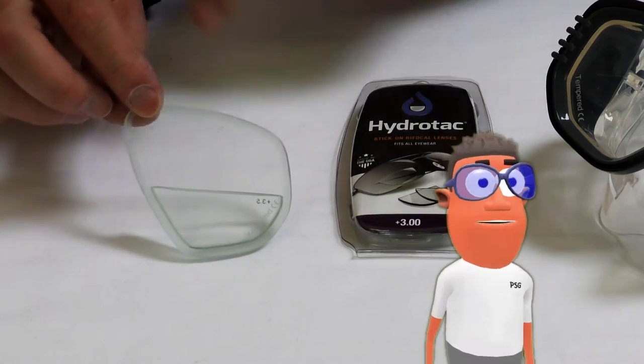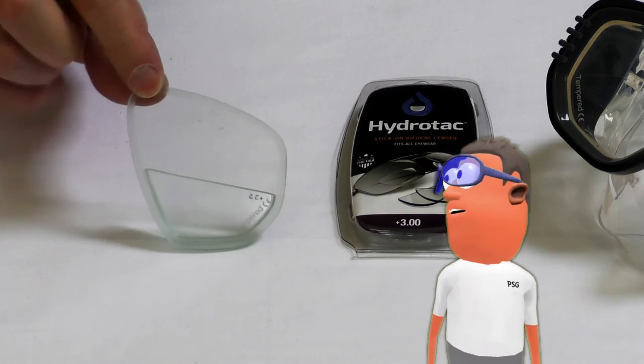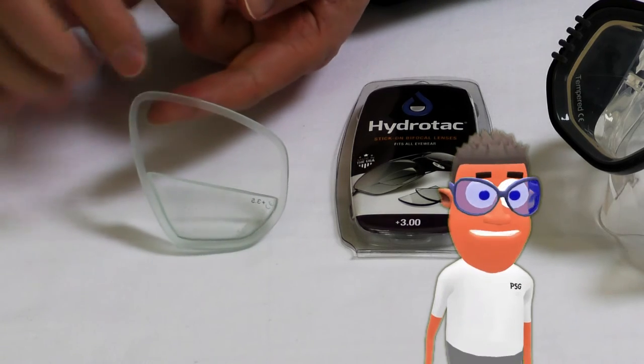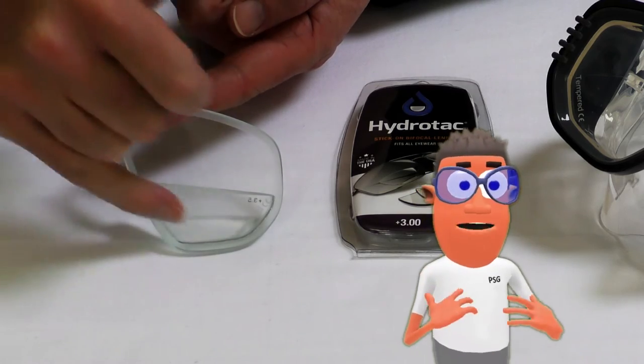You can just about see there's a dividing line across the middle here and a part at the bottom. What these bifocal means is there's absolutely zero power at the top, but you've got power at the bottom for reading.